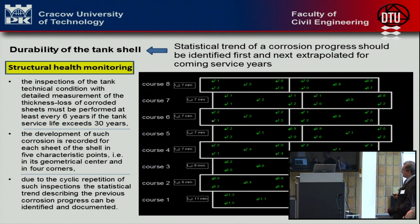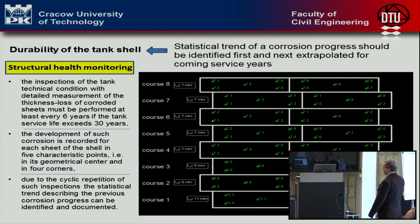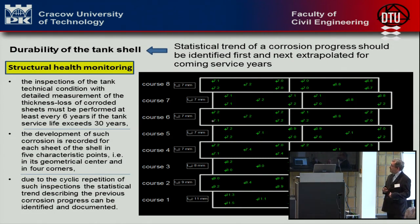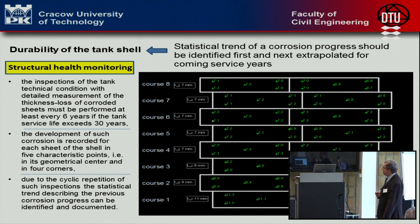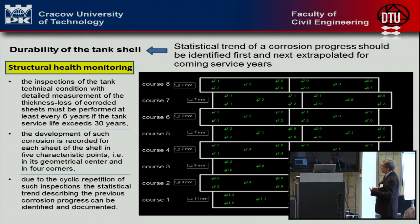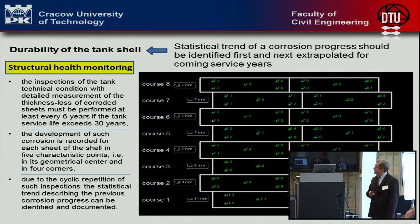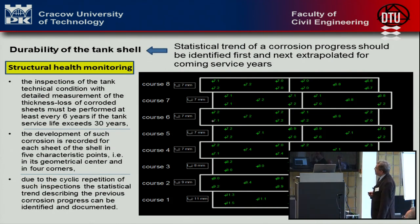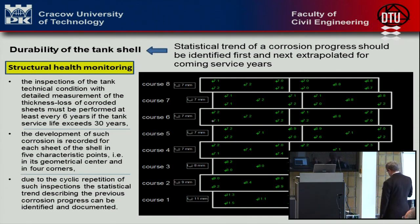Due to the cyclic repetition of such inspections, the statistical trend describing the previous corrosion progress can be identified. In the figure presented on the right side of the slide, you can observe the characteristic points in which the corrosion process is recorded during the technical inspection.